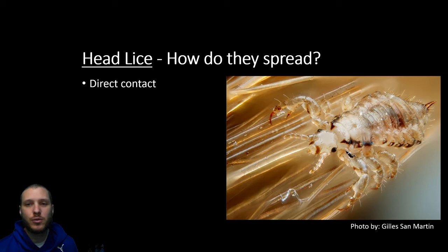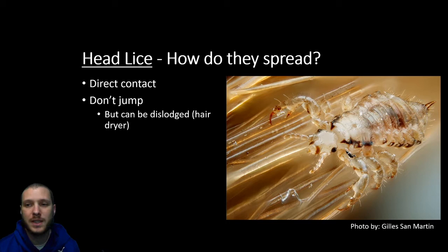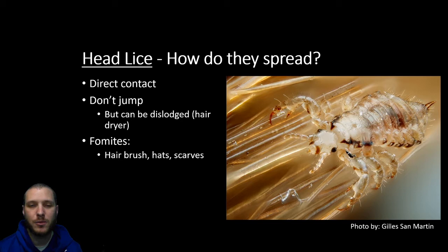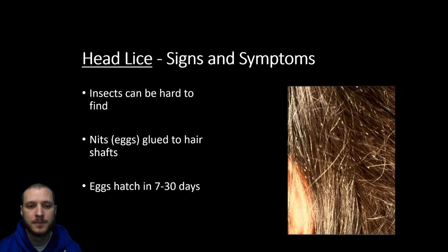Lice spread through direct contact. They don't jump or go from host to host easily, though they can be dislodged if severely disrupted, like with a hair dryer. They're transmitted through fomites — carriers of a certain pathogen. In this case, hairbrushes, hats, scarves, costumes, and wigs can carry lice, so you don't want to share those items. Insects can be hard to find because they're good at running away once you start poking around.